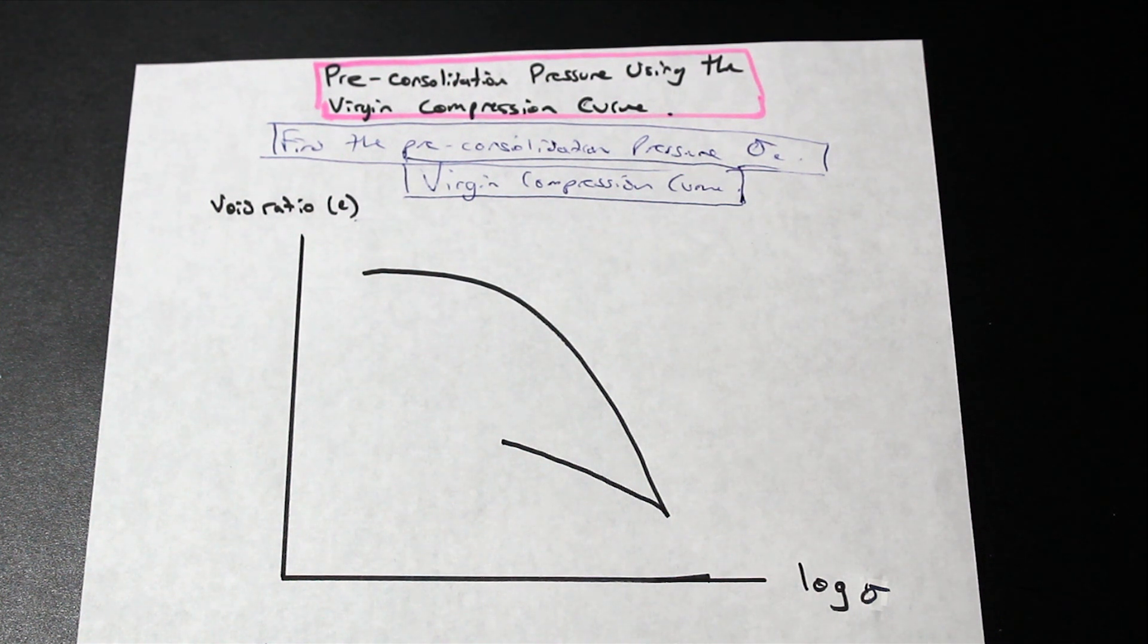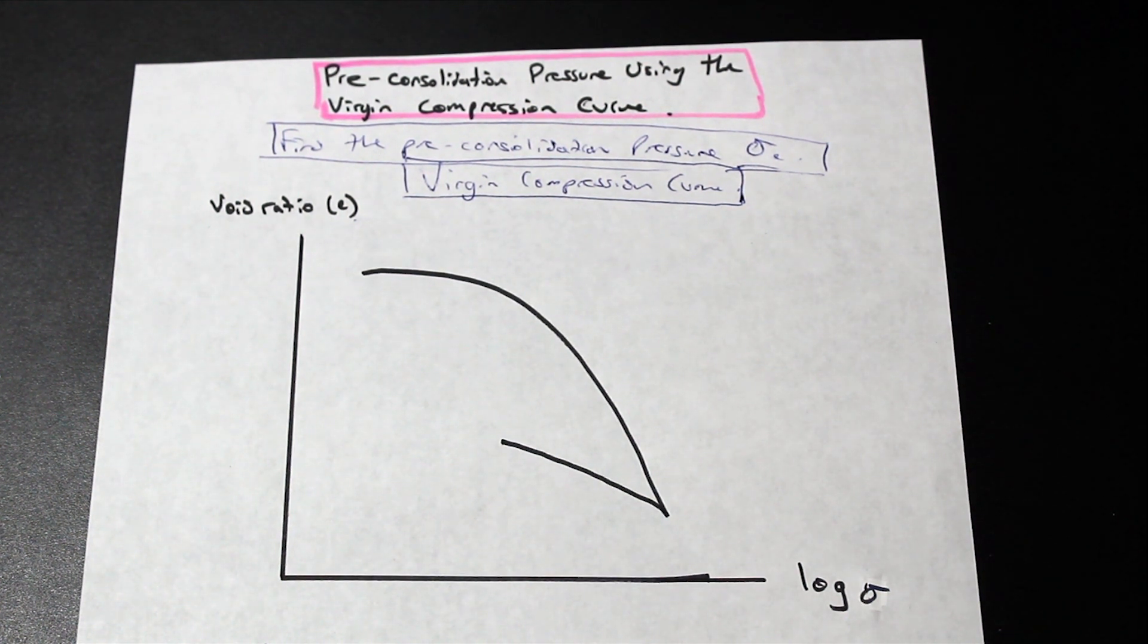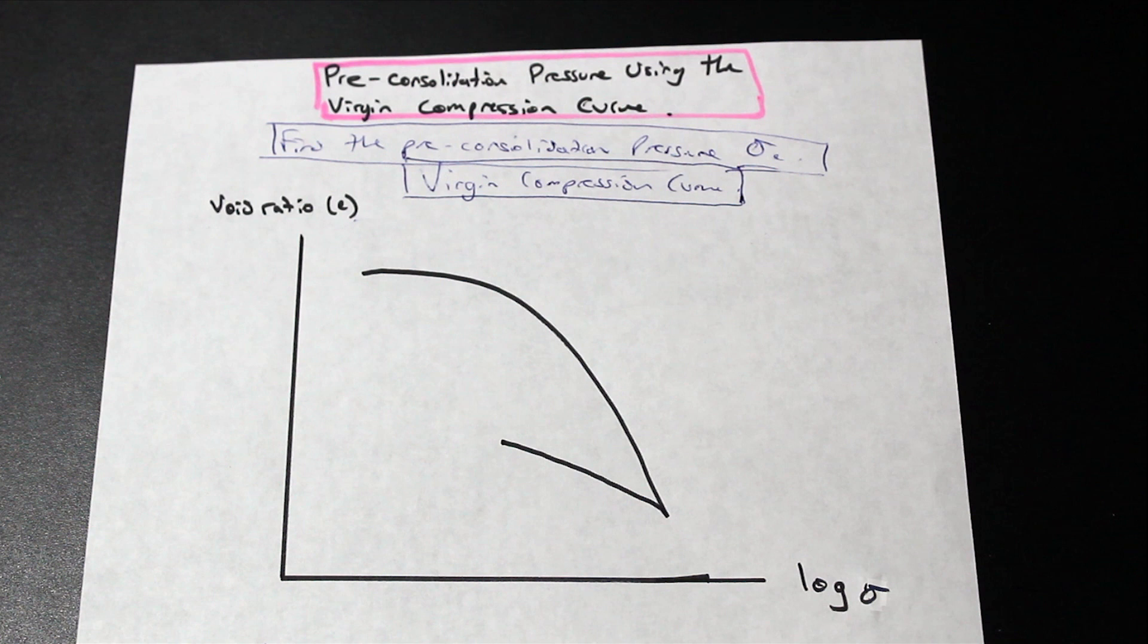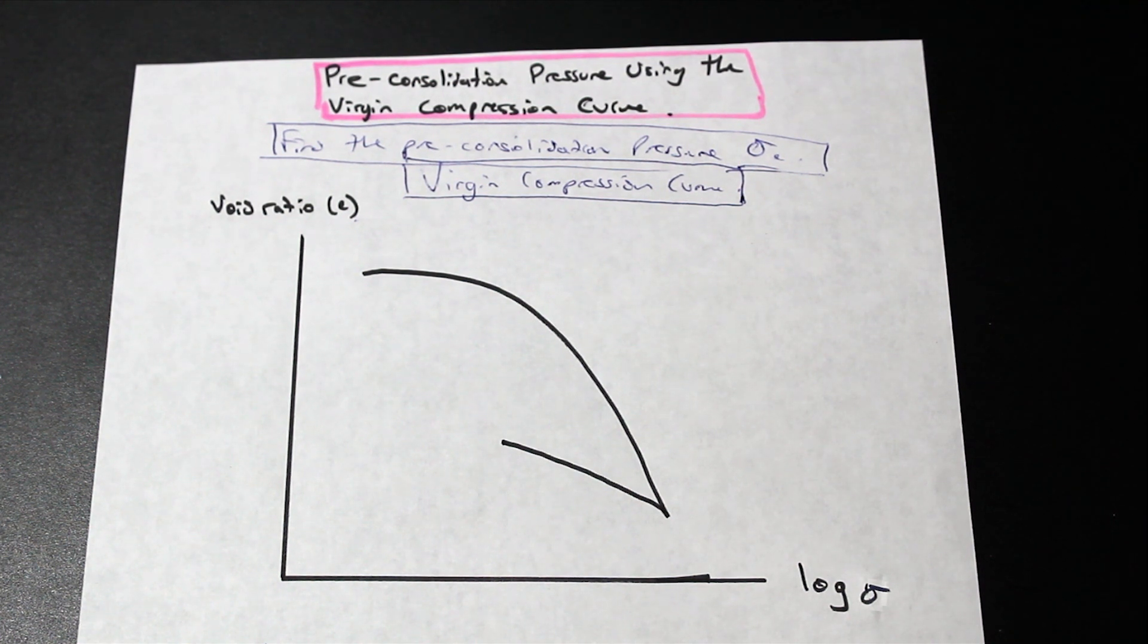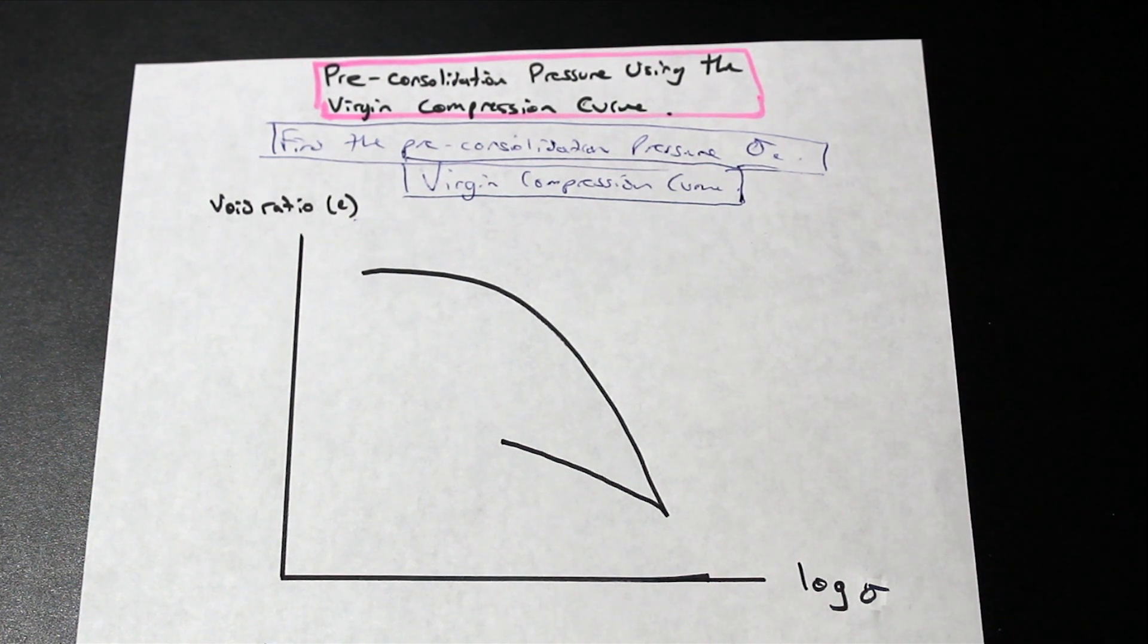So consolidation happens in clays, very fine-grained soils, not granular soils like sand, in which the clay after it's loaded, the water within the saturated clay cannot leave immediately. And because it can't leave immediately, a pore water pressure is increased as a result of that. And then slowly over time,